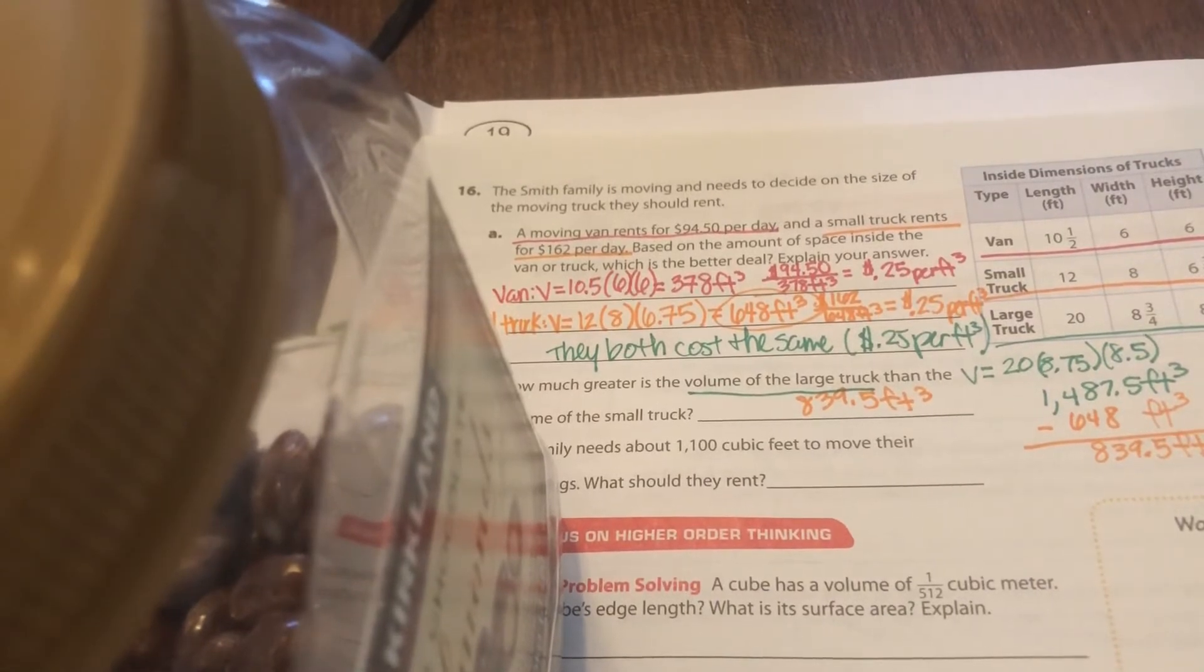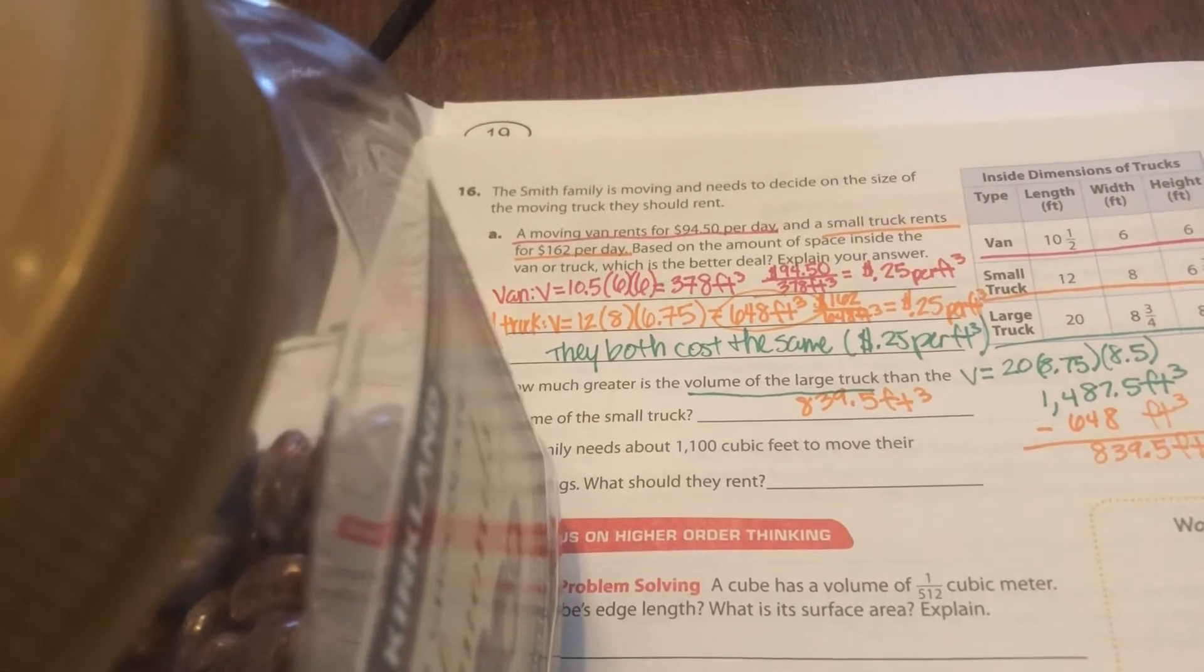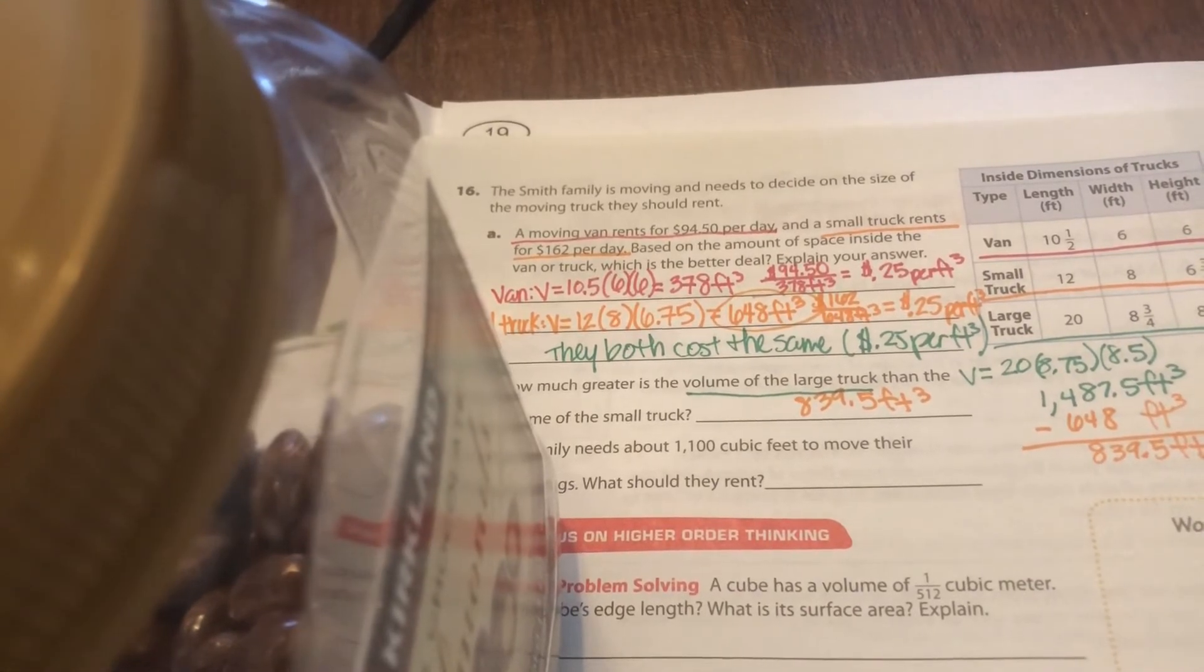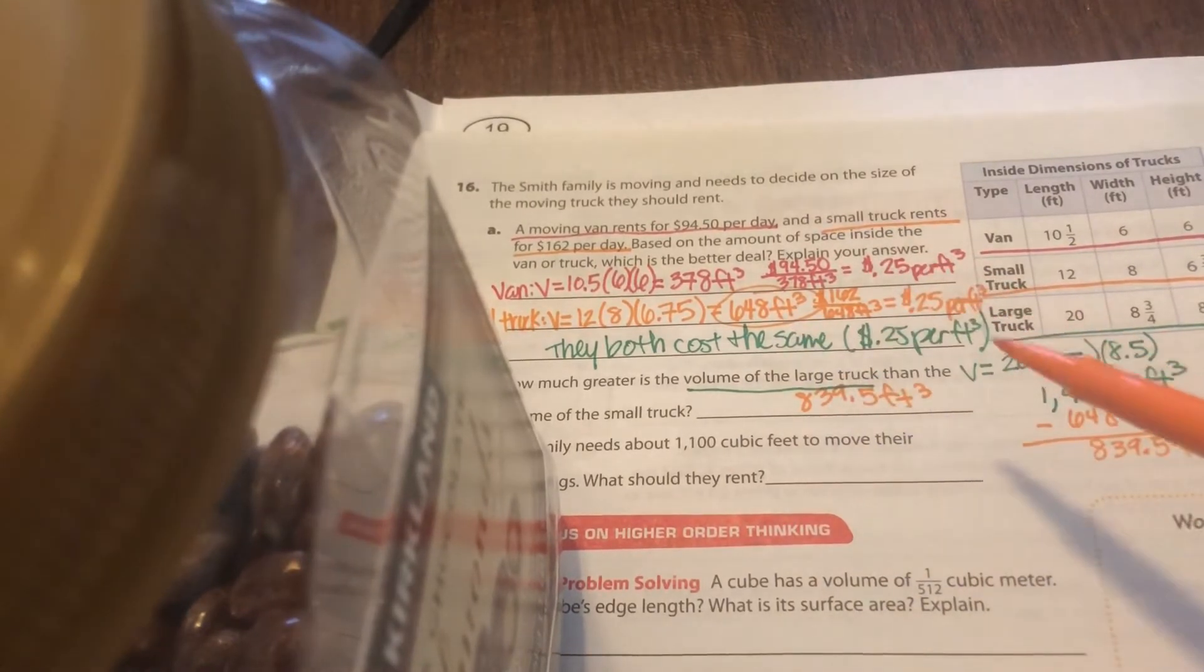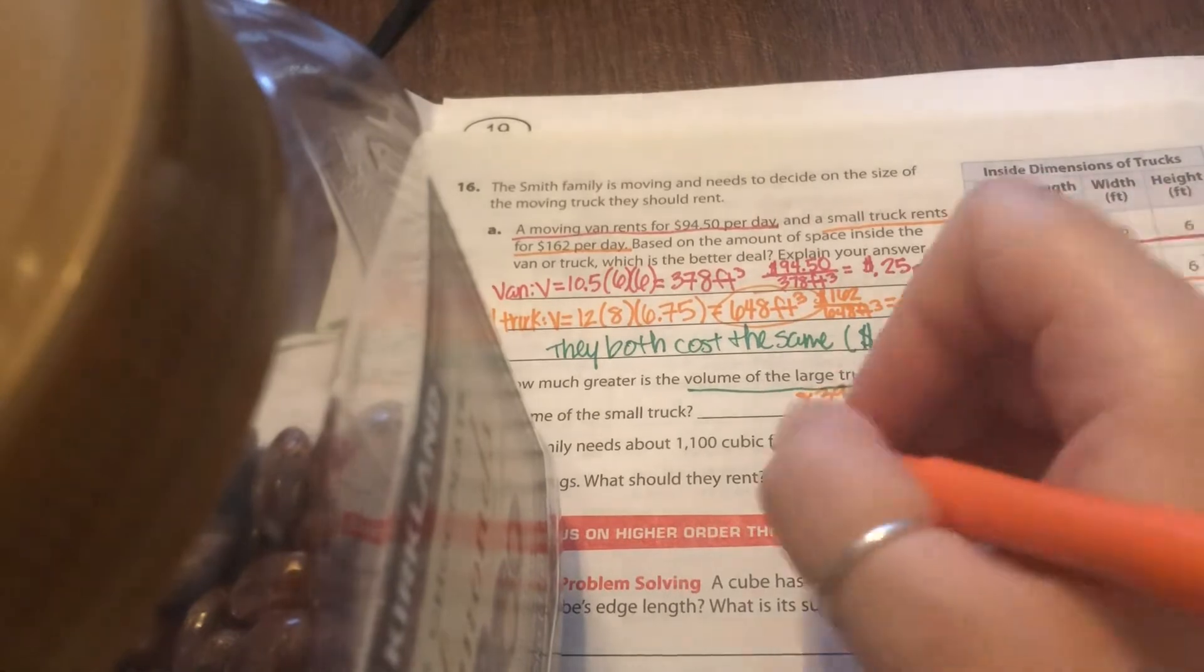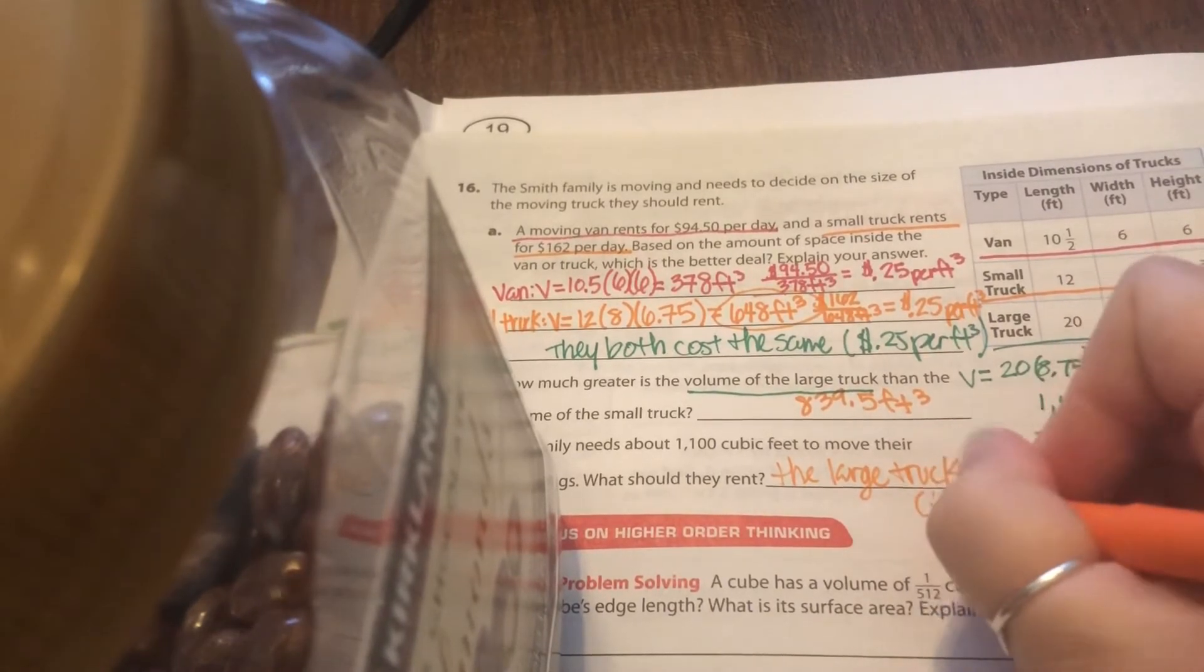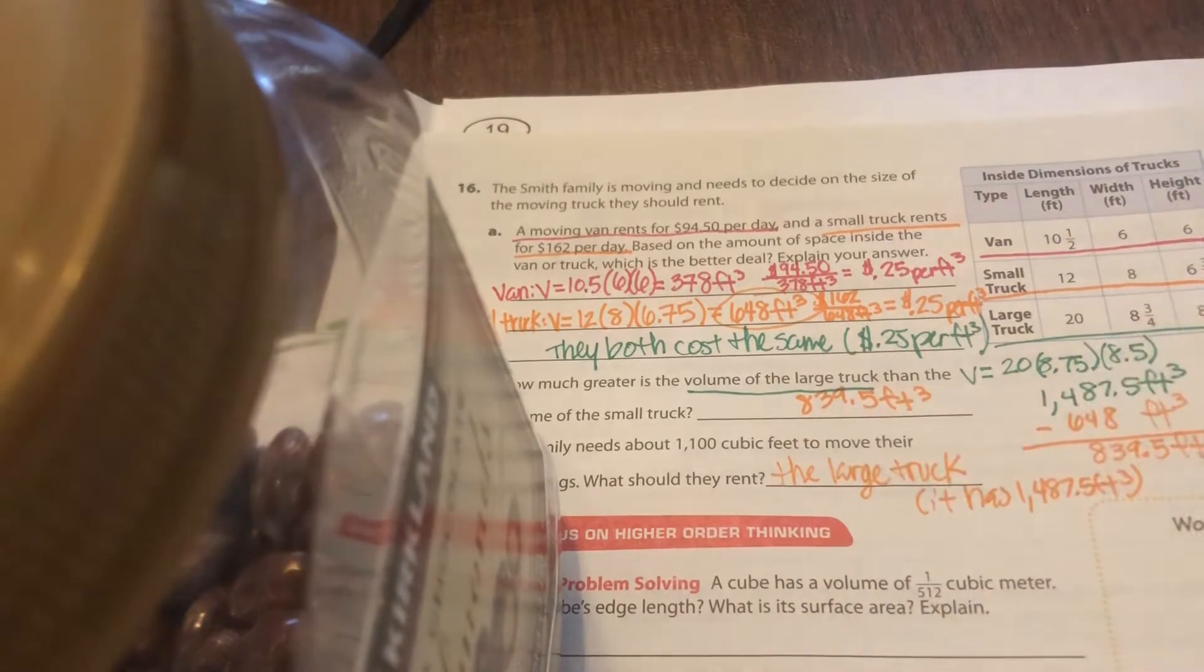Part C is saying the family needs about 1,100 cubic feet. They measured all their furniture and like stacked it up because right now it's all stored in the garage. And then they measured how much space it takes up. And now they need to decide which truck should they get. So you answer the question, which one do you think is the best thing for them? Well, if they have 1,100 cubic feet of stuff that they need to move. This one can only hold 378 cubic feet. This one can hold 648 cubic feet. This one can hold 1,487 cubic feet. So the best item, they'd only have to do it in one trip. The large truck.